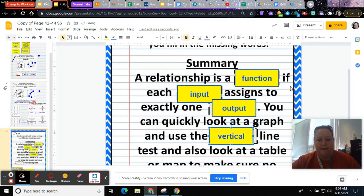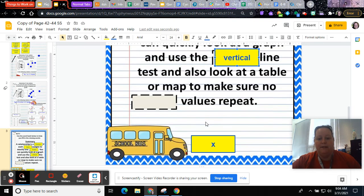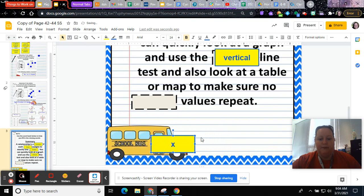Look at a graph, and if it makes a vertical line and it crosses twice, then it won't be a function. You could also look at a table or map to make sure that no x values repeat. So this is some good stuff.